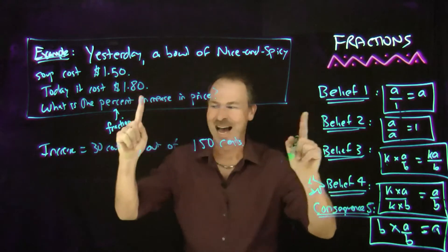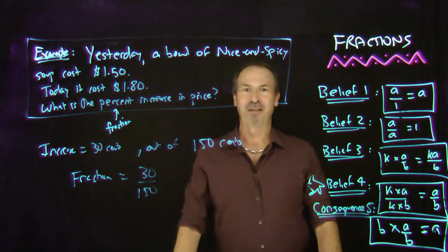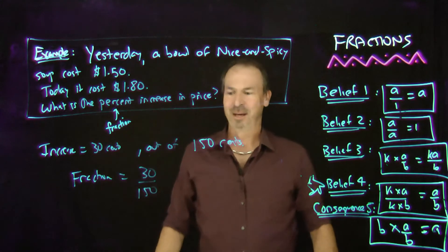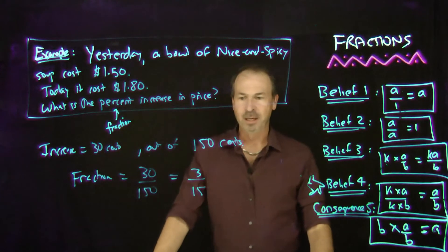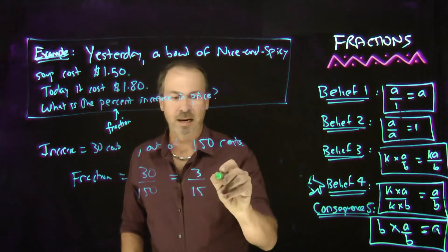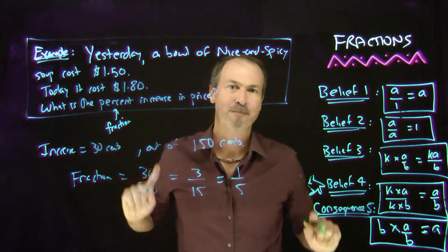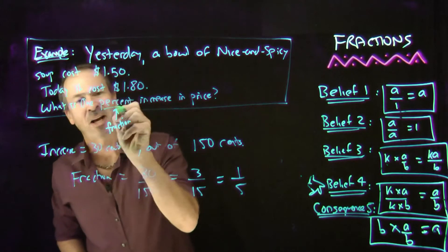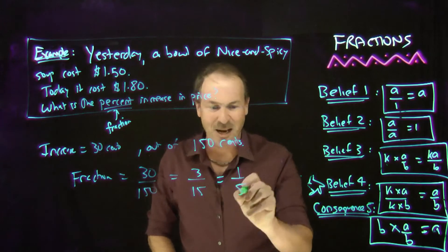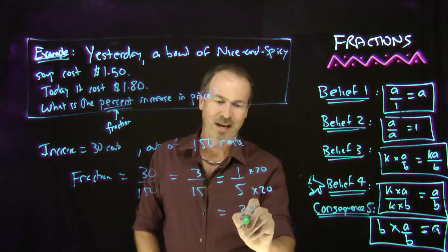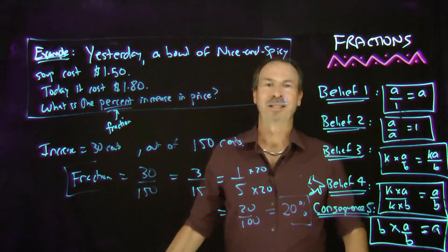So the increase was 30 cents out of 150 cents. The fraction is 30 out of 150. I can make that simpler: divide top and bottom by 10 to get 3 over 15, which is really one fifth. The fraction increase in price is one fifth. Now I just need to rewrite that with denominator 100: multiply by 20 over 20, giving me 20 hundredths — which means the answer is actually 20%. The percent increase is 20%.